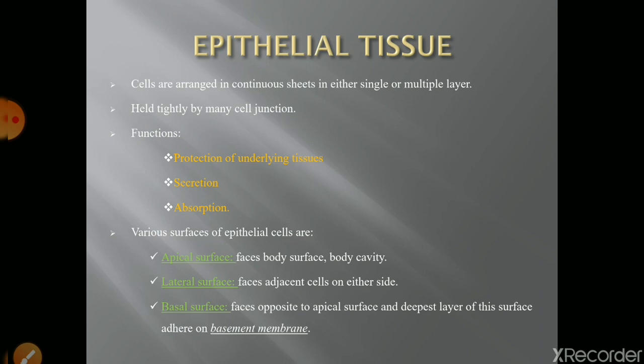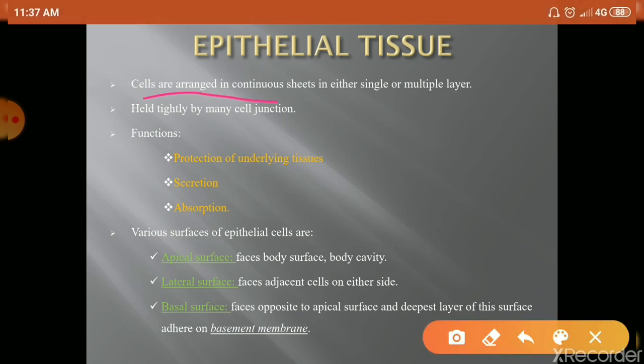Now let's talk about the first type of tissue — the epithelial tissue. Epithelial tissue is made by cells arranged in continuous sheets, either single layers or multiple layers. The cells are tightly and closely packed with no gaps between them. Communication occurs through cell junctions — tight junctions, desmosomes, adherence junctions, and gap junctions. In a previous video I explained the different types of cell junctions, so please check that video before reading about tissue.